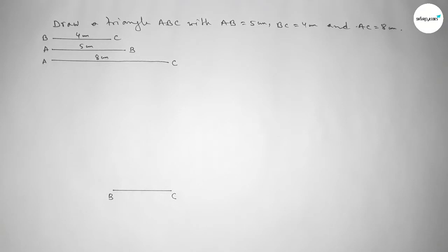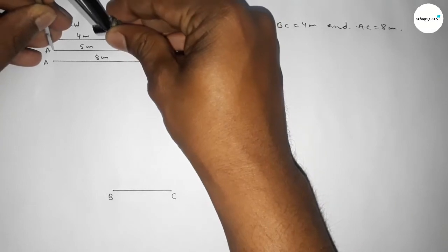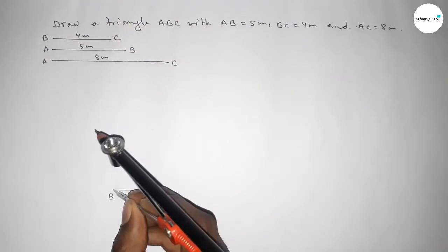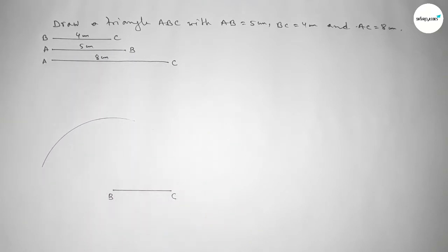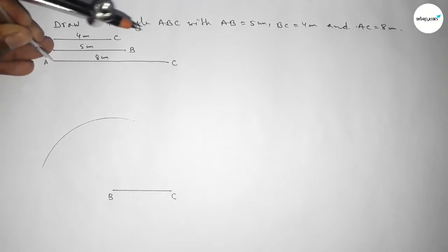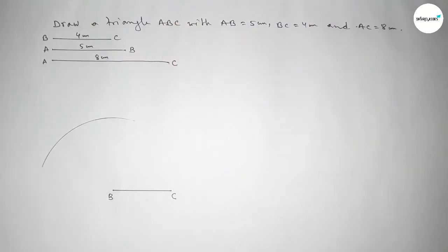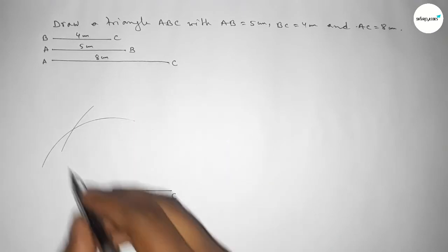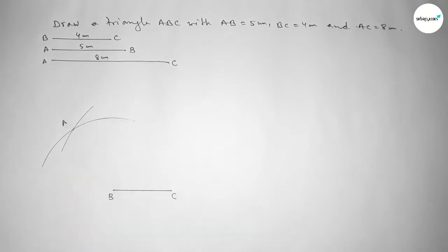Now taking the length AB equal to 5 centimeters using a compass, placing the compass on point B, and drawing an arc. Then taking the length AC equal to 8 centimeters using the compass, placing it on point C, and cutting an arc. Both arcs intersect at a point — taking that intersection as point A.